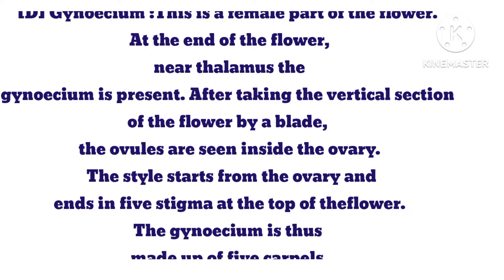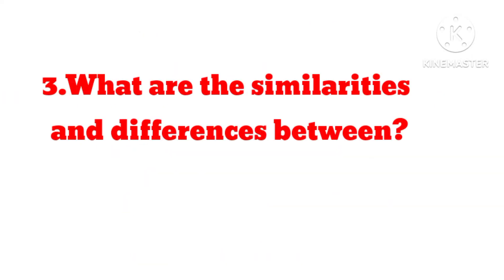D. Gynoecium — this is the female part of the flower. After taking a vertical section of the flower by a blade, the ovules are seen inside the ovary. The style starts from the ovary. The gynoecium ends in 5 stigmas at the top of the flower. The gynoecium is thus made up of 5 carpels.